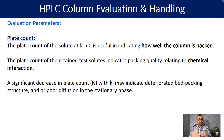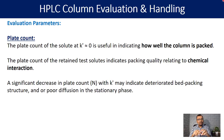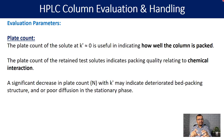A significant decrease in plate count N at higher k' may indicate a deteriorated bed packing structure and/or poor diffusion in the stationary phase. Diffusion is an important parameter for efficiency — the number of interactions of your compound with the stationary phase. If diffusion decreases, your plate count or number of interactions will also decrease. That is the intention of having late eluting compounds in your performance mixture.